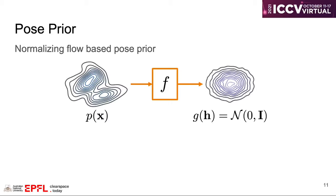In other words, we model the 3D human pose distribution px by learning a bijective and differentiable function f, which maps a pose sample x to a latent representation h, following a standard Gaussian distribution.